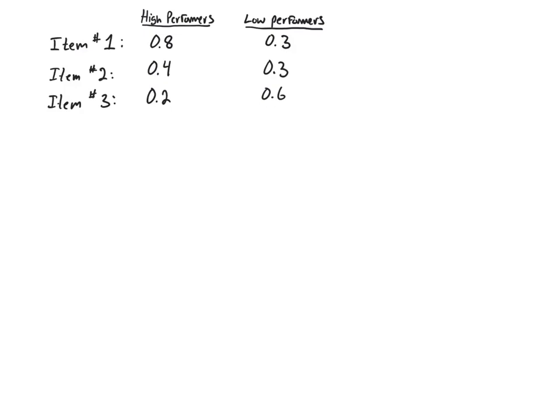Then we calculate the item difficulty for each item for those groups, and then we subtract the low-performing difficulty from the high-performing difficulty, and the number that we get is the discrimination.